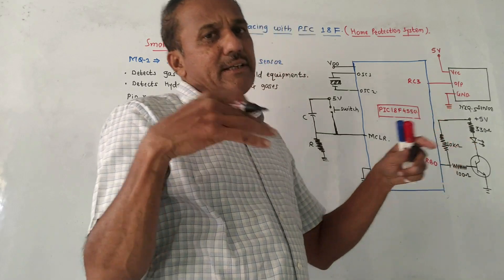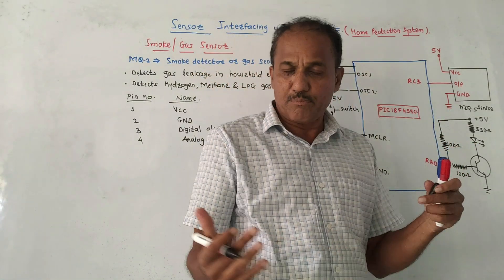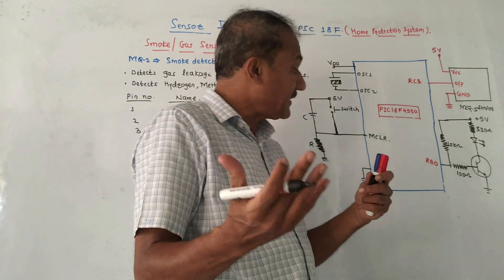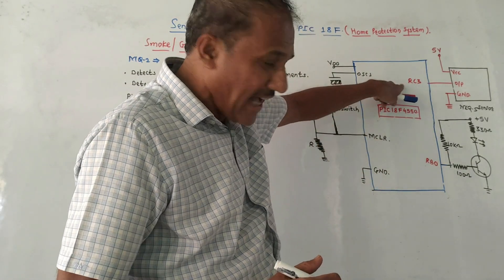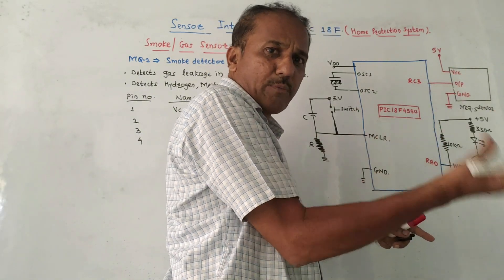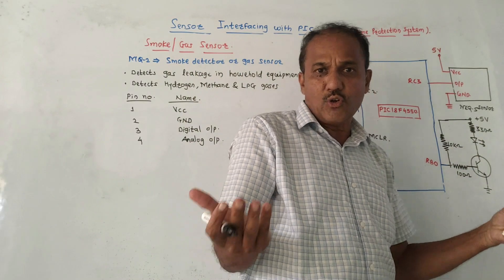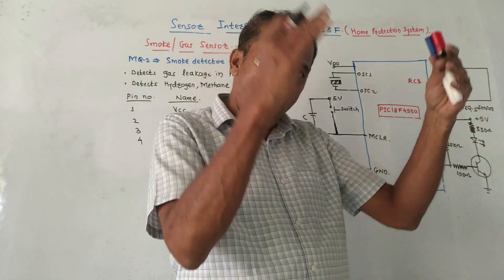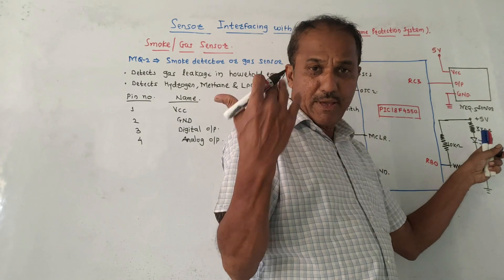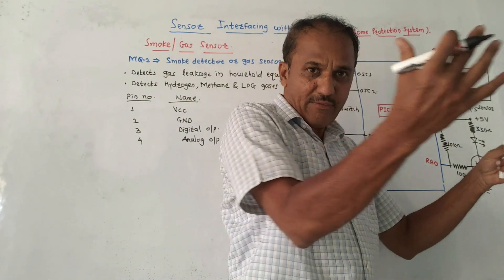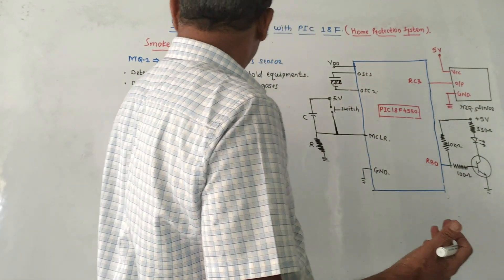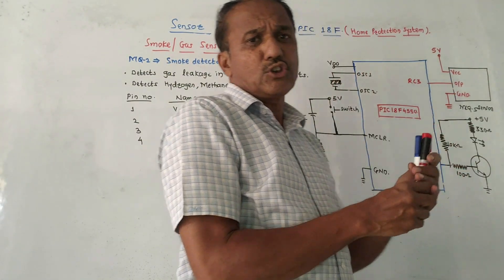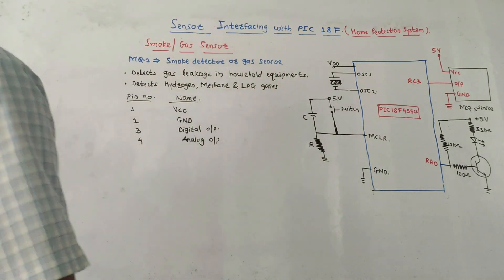If both sensors are asked together — for example, design a home protection system for detection of smoke as well as PIR infrared sensing — you can use different pins. You can use an LED for PIR detection and a buzzer interfaced for the detection of smoke. This is the way to design a home protection system. That's it for unit number five. Thank you for watching this video.